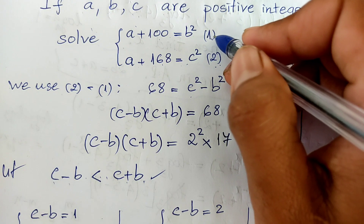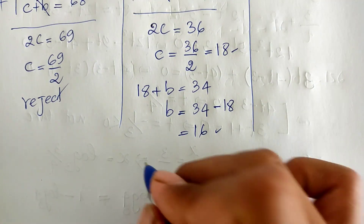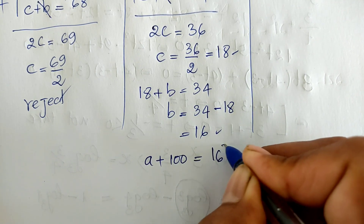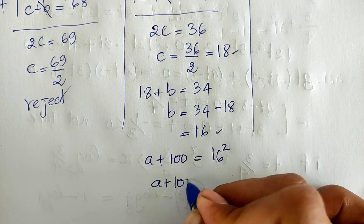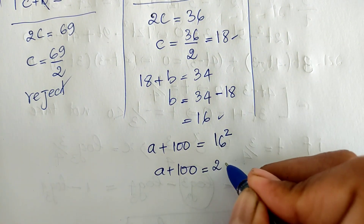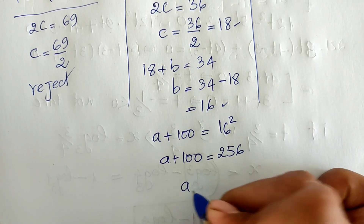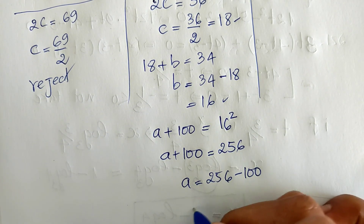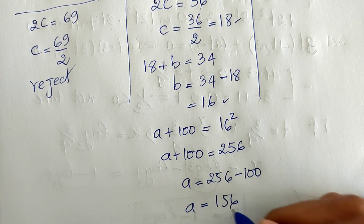Now we know the values of b and c, so we substitute into the first equation. We have a plus 100 equals b squared, which gives a plus 100 equals 16 squared equals 256. Therefore a equals 256 minus 100, which equals 156.